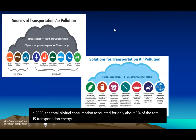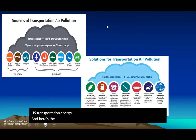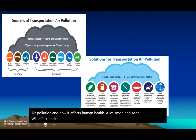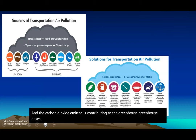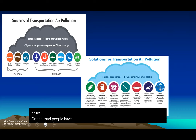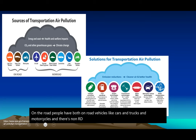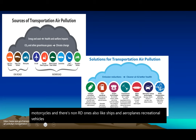Air pollution affects human health significantly. Smog and soot affect human health, and the carbon dioxide emitted contributes to greenhouse gases. On the road we have on-road vehicles like cars, trucks, and motorcycles. There are also non-road ones like ships, airplanes, recreational vehicles, agriculture equipment, and locomotives.